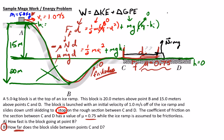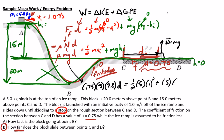Now I can put in all my numbers. The mu times mg term is 0.75 times the mass, which is 5, times gravity, which is 9.8, times d — and I don't know what d is, that's what I'm trying to find. Then I have one-half times the mass (5) times the initial velocity (1), squared. And then I have my initial gravitational potential energy, which is 5 times 9.8 times 15.